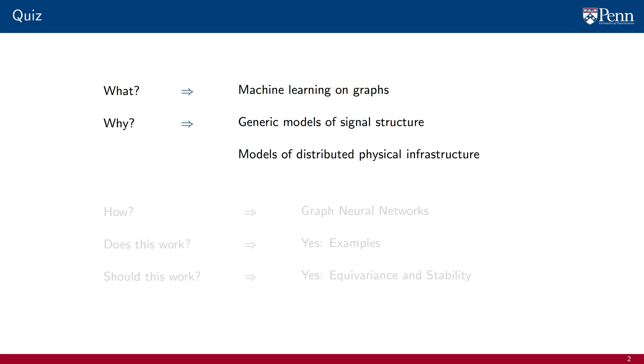Graphs are also models of distributed physical infrastructure, such as wireless networks, power grids, and collaborative systems, in which the graph is not only helpful but inherent.